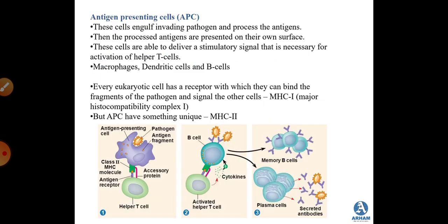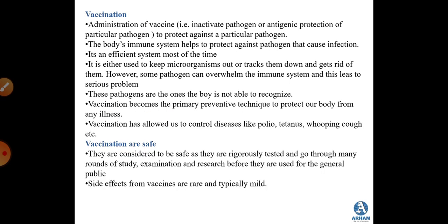The second type of cell involved in the immune system is the antigen-presenting cell (APC). These cells signal other cells whenever they come into contact with any kind of pathogen, delivering stimulatory signals to activate other cells. That is what we studied in the previous session.